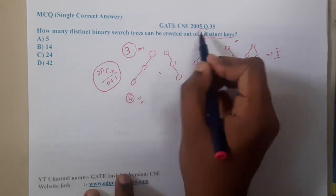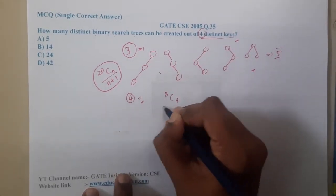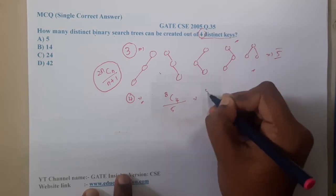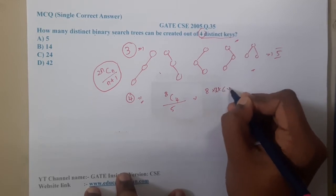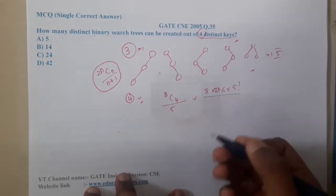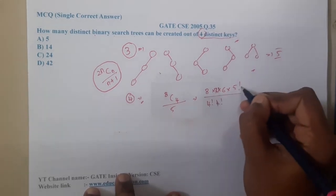So here 4 you substitute. So 2 into 4 is 8C4 by 5. If you write it clearly, it is nothing but 8 into 7 into 6 into 5 factorial, that is nothing but 8 factorial in total, into 4 factorial by 4 factorial, into 5.